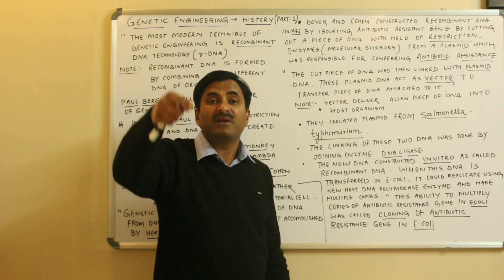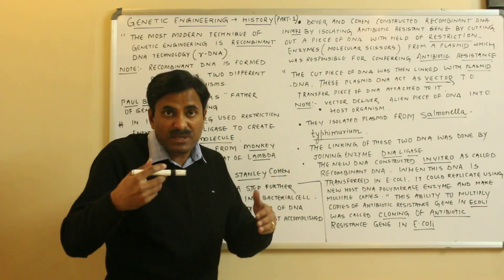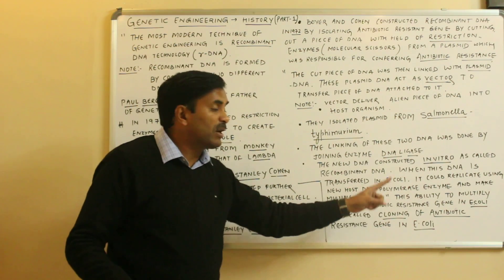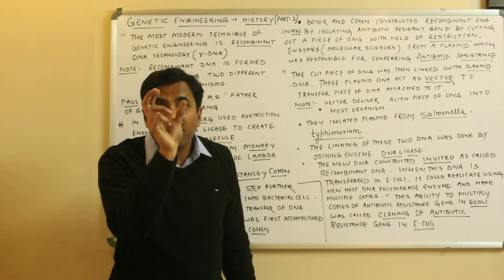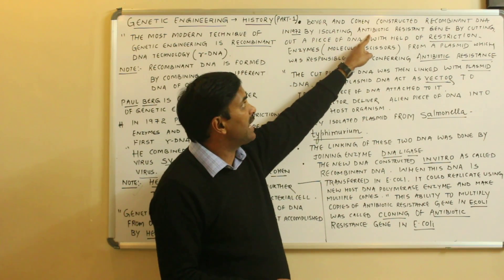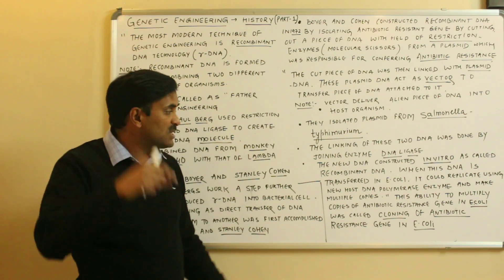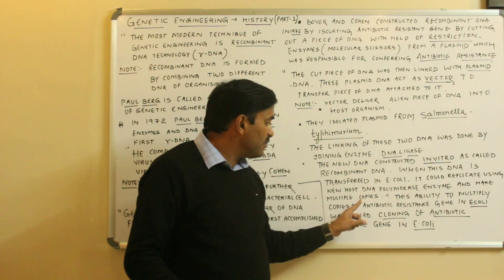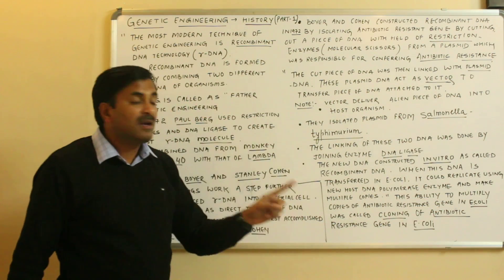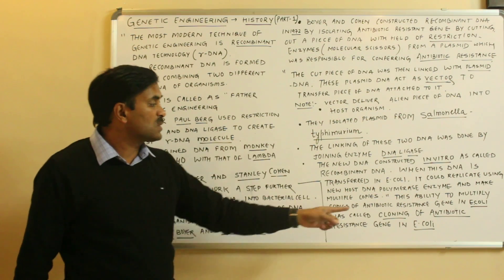Inside the host cell E. coli, many copies of the recombinant DNA are formed. This ability to make multiple copies is called cloning. The gene of interest — the antibiotic resistant gene — was our desired DNA combined with the vector DNA, and its ability to multiply copies of the antibiotic resistant gene in E. coli was called cloning of the antibiotic resistant gene.